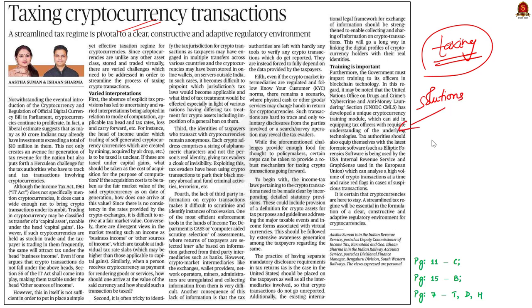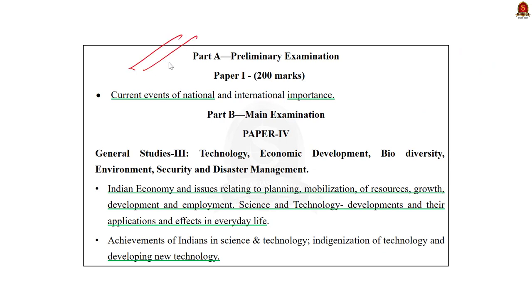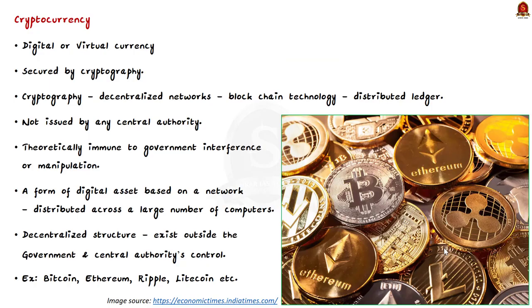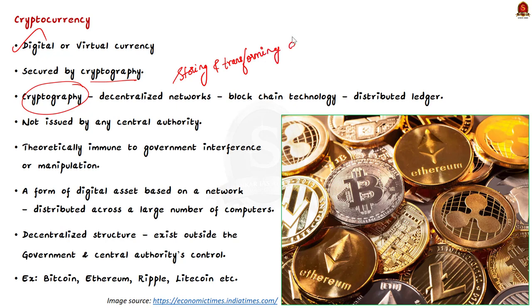The syllabus relevant to this article is given here for reference. First of all, what is a cryptocurrency? A cryptocurrency is a digital or virtual currency that is secured by cryptography. Cryptography is a method of storing and transmitting data in a particular form so that only those for whom it is intended can read and process it. Many cryptocurrencies are decentralized networks based on blockchain technology, which is a distributed ledger enforced by a disparate network of computers.